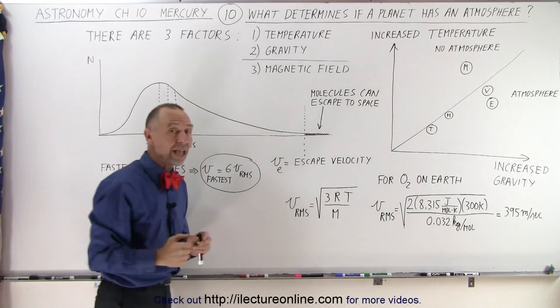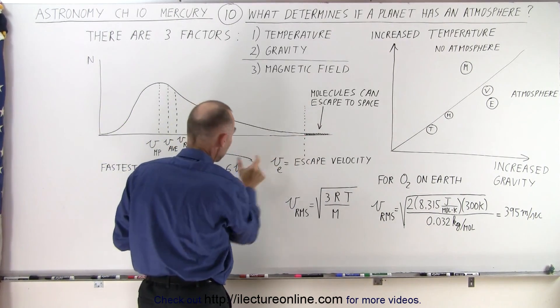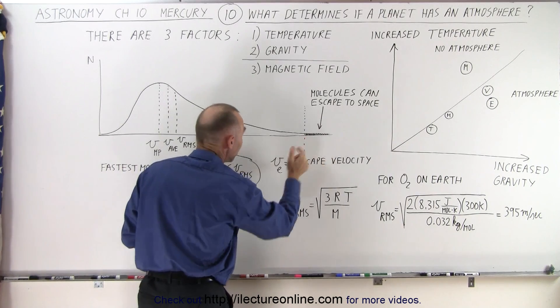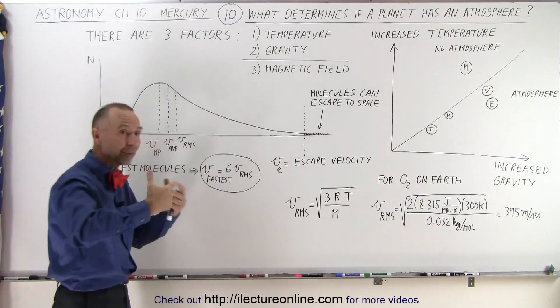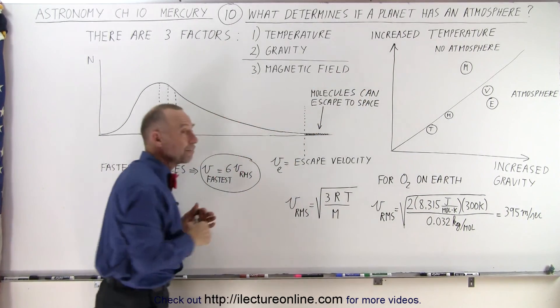And here, we have a diagram that shows that if this is the escape speed, and a very small number of the molecules move faster than that, because it's hot enough and there's not enough gravity, and the escape velocity is not very big, then the molecules can escape.